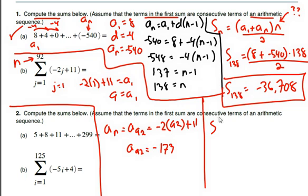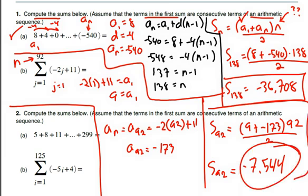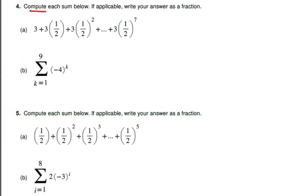So the summation of the first 92 terms is equal to first term, so 9 plus last term, negative 173 times the number of terms, which is 92, divided by 2. And that's going to be negative 7544. That's a good answer. And we're done with that problem.